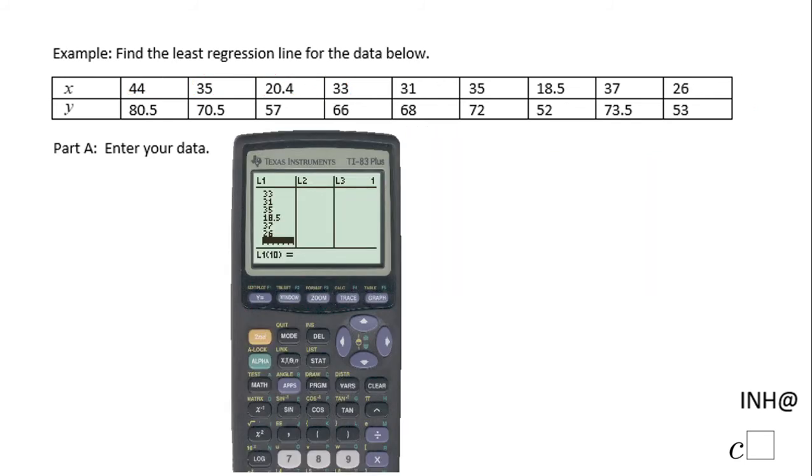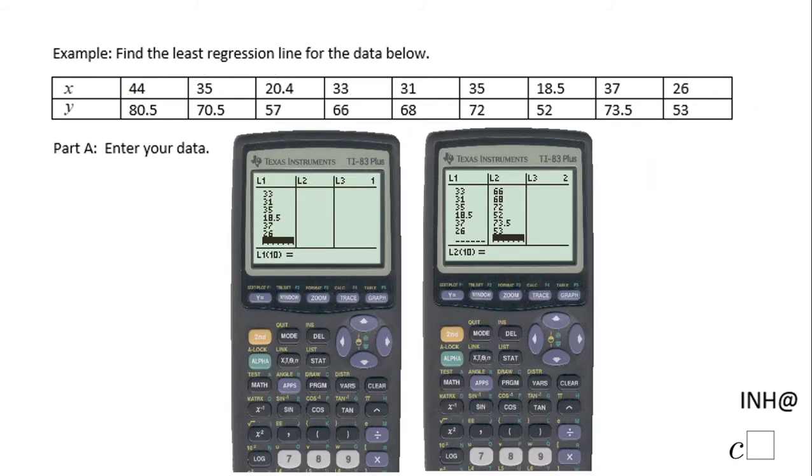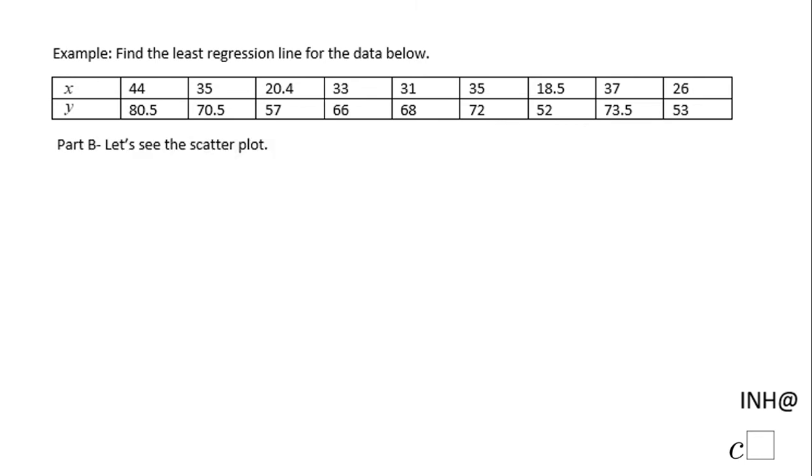And you do the same thing. You're going to get the two columns filled with the data we have in the table. And now we can move to Part B. I will suggest you go and see how this scatter plot looks like.